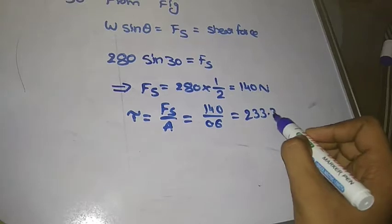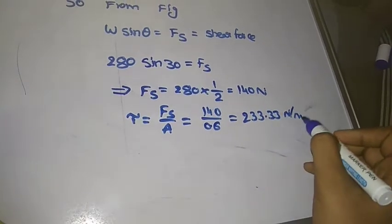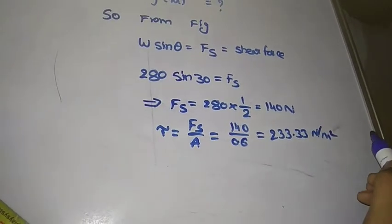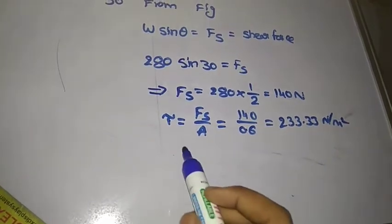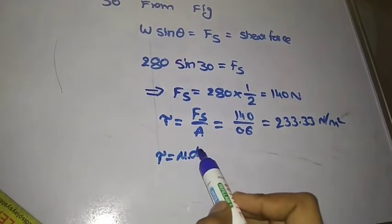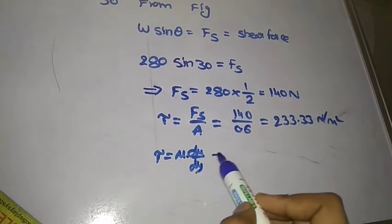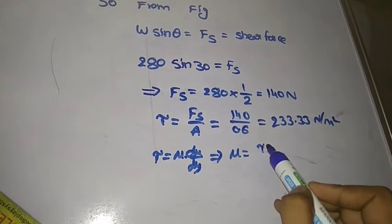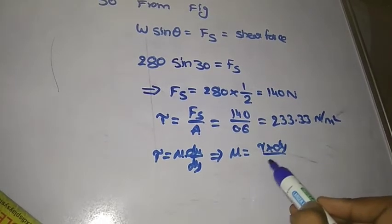233.33 N/m² is the shear stress value. We know that τ = μ × du/dy, so μ = τ × dy/du.